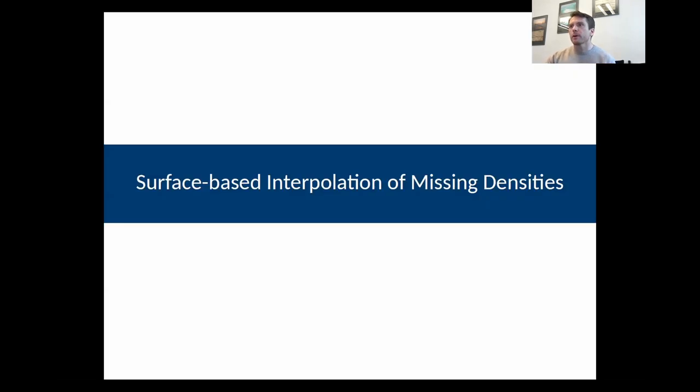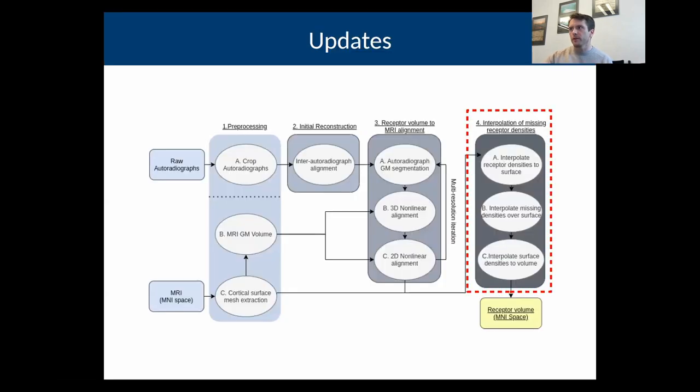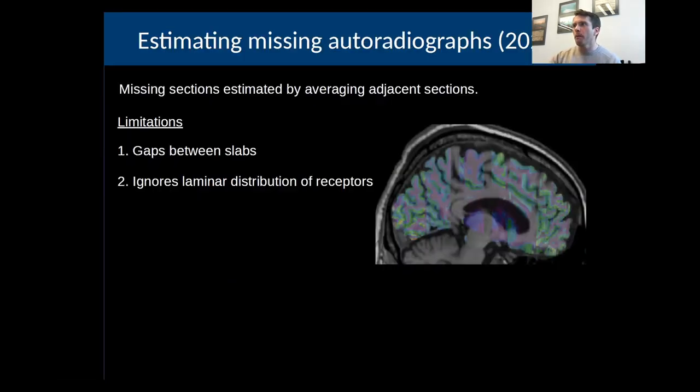Now the next part is the surface-based interpolation of missing densities. That's the fourth stage. What was being done before is that for autoradiographs where there was a missing section or at positions where we didn't acquire autoradiographs for a particular receptor, we were just estimating that autoradiograph based off of the adjacent autoradiographs in the posterior and anterior direction. That's really just finding the nearest neighbors and doing a linear average.